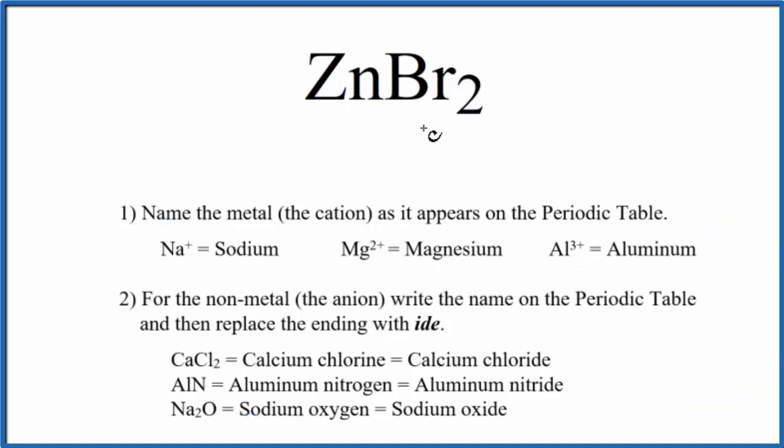So to write the name for ZnBr2, we first write the name of the metal as it appears on the periodic table. So we have Zn, which is zinc.